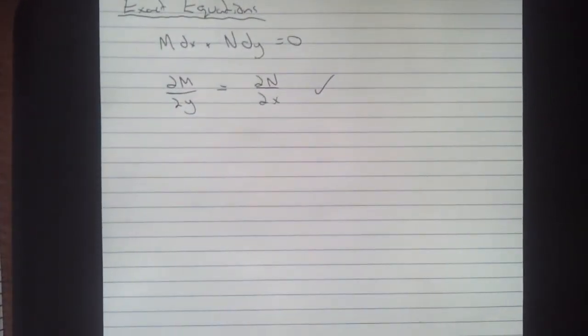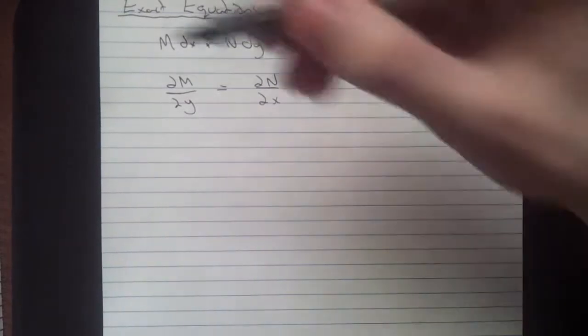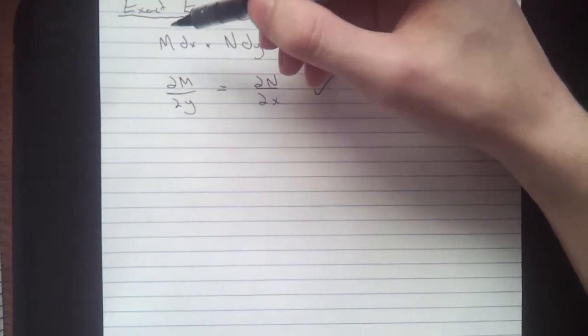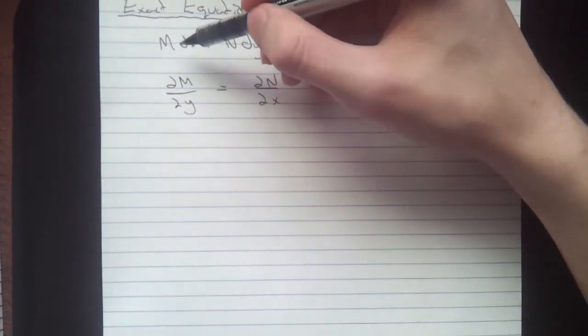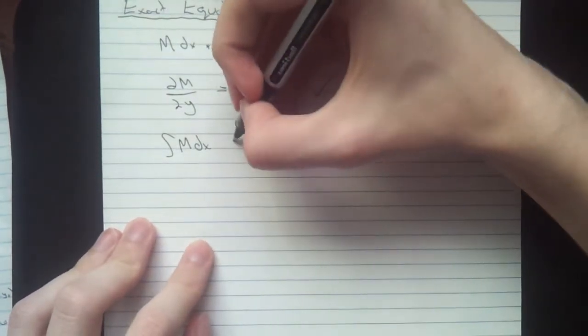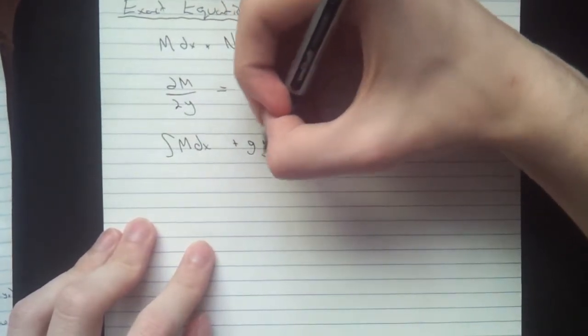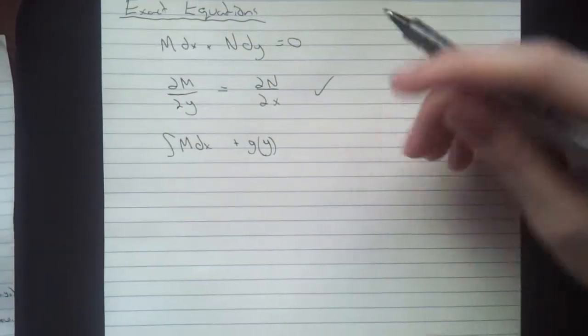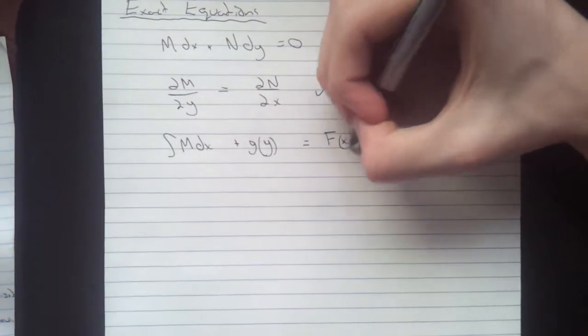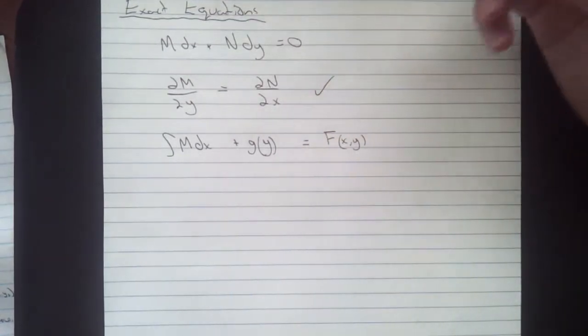So basically what's going to happen is you want to take your M and you want to take the integral of that M with respect to x. So we're going to take the integral of M dx. And then we're going to add on something else. We're going to call that g of y. It's just another term. And that's going to be capital F of x and y because typically there will be x's and y's in there.